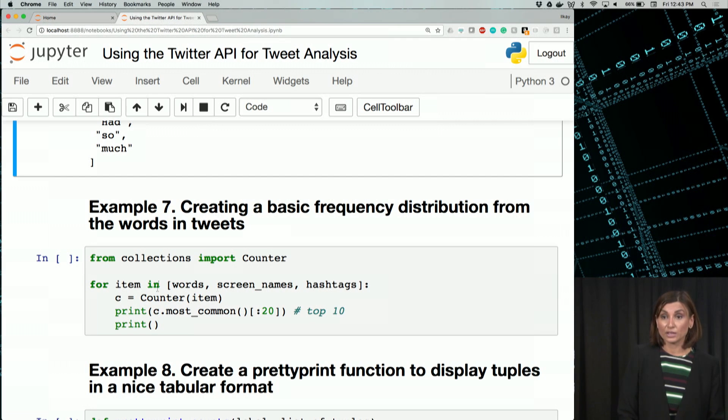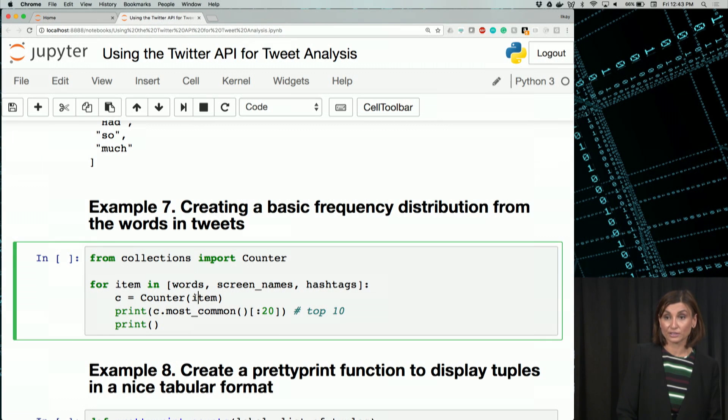And we are iterating over the counter to come up with the most common words for each of them. So we create a counter with the item, first the words, then screen names, then hashtags, and we are printing them for the most common 20 words. Let's display this.